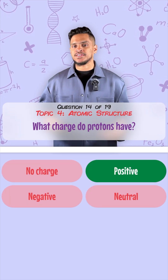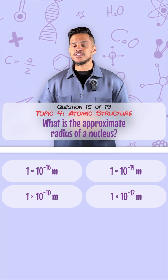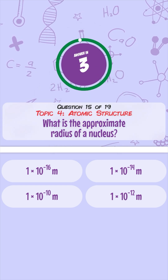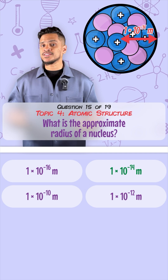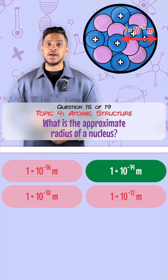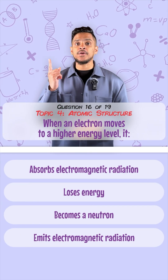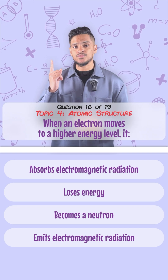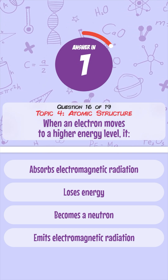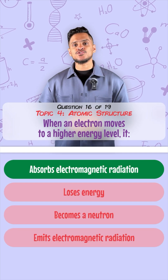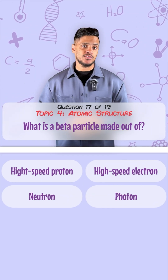What charge do protons have? They have a positive charge. What is the approximate radius of a nucleus? This is 1 times 10 to the minus 14 meters. When an electron moves up an energy level, what does it do? It absorbs electromagnetic radiation.